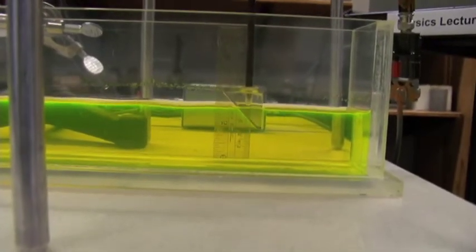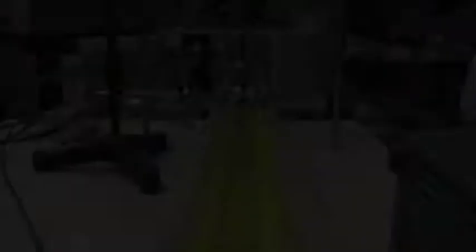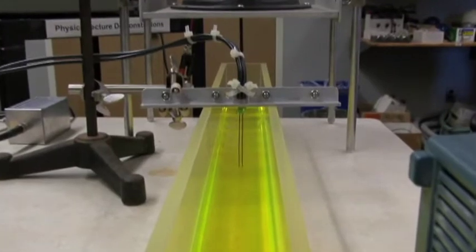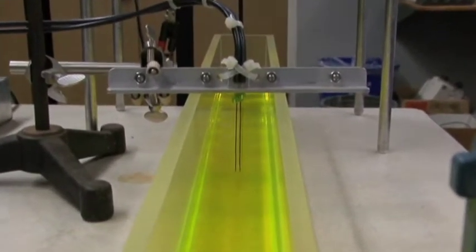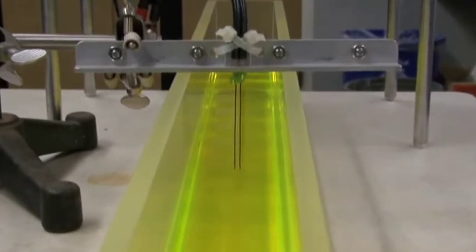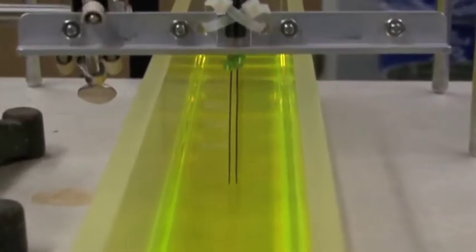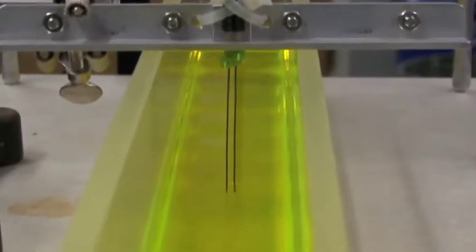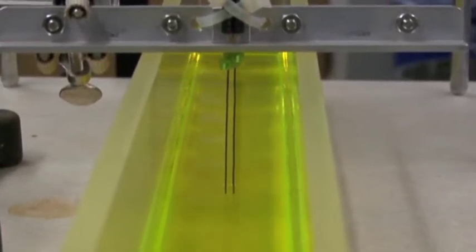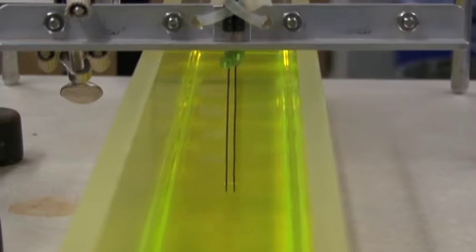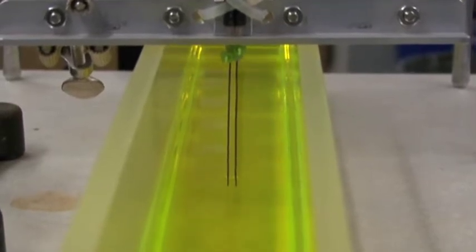Right now low amplitude waves are being generated. A homemade wave height probe is being used here and it consists of just these two bare wires that you see there. And we're picking up on the AC electrical resistance between the two wires. When the level of the water goes up the resistance goes down so we utilize that to transduce the wave height.